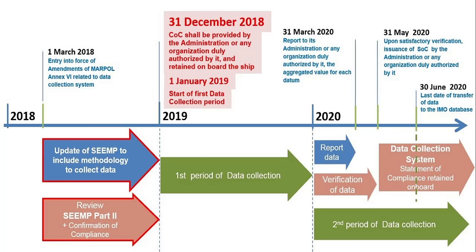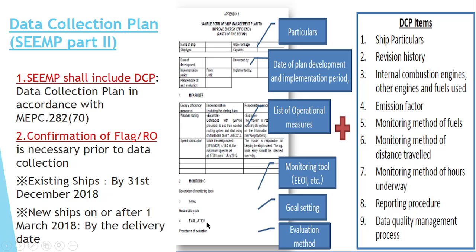The validity of the SOC is valid from the issue date to the next SOC. In SEEMP Part 2, it mentions the particulars of the ship: what is the main engine, auxiliary engine, boiler, combustion engine, type of fuel used, emission factor, which monitoring method of fuel is being used, how much distance you have traveled, how many hours underway, what is the reporting procedure, and what is the data quality system. These are all the data mentioned in the IMO DCS system. The IMO DCS data collection plan is done according to MEPC 280(70).